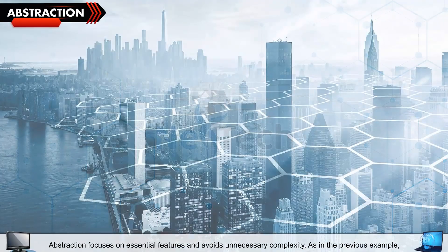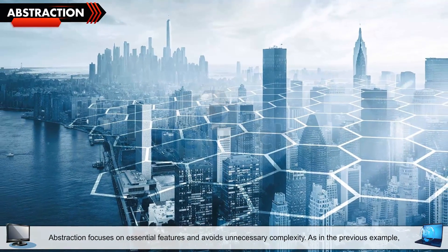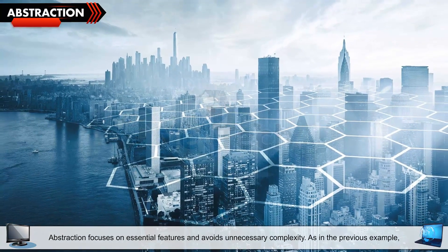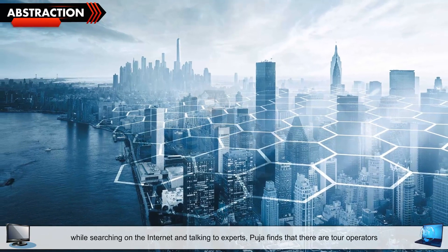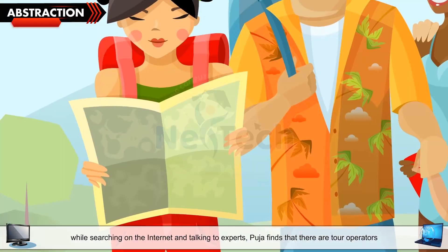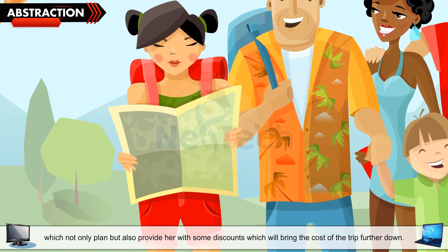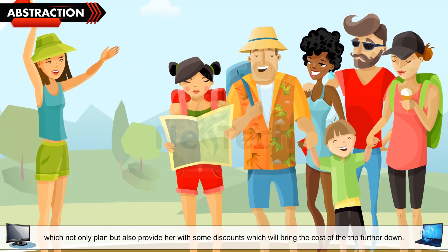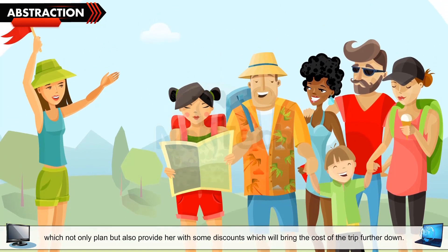Abstraction: Abstraction focuses on essential features and avoids unnecessary complexity. As in the previous example, while searching on the internet and talking to experts, Pooja finds that there are tour operators which not only plan but also provide her with some discounts which will bring the cost of the trip further down.